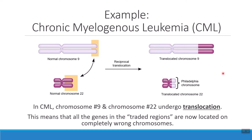We actually have a special name for chromosome 22 when it's undergone translocation. That name — as we see here — is called the Philadelphia chromosome, a very small chromosome compared to what it's supposed to be. The Philadelphia chromosome formed because of translocation.